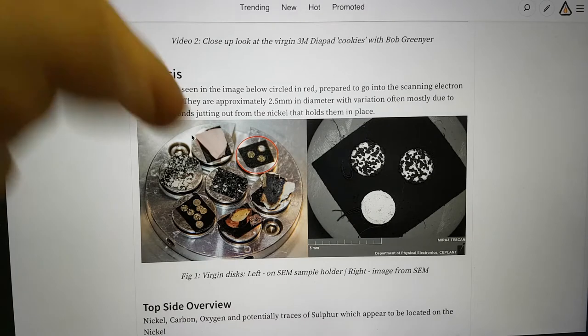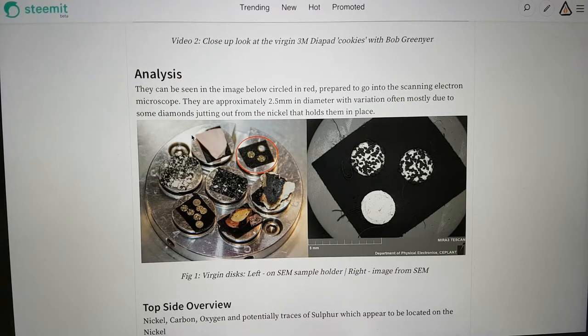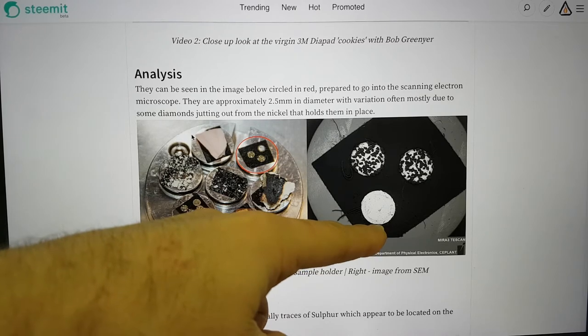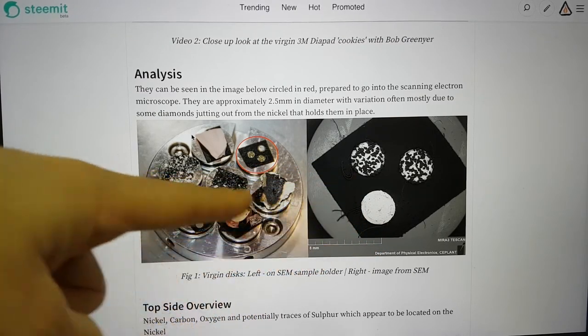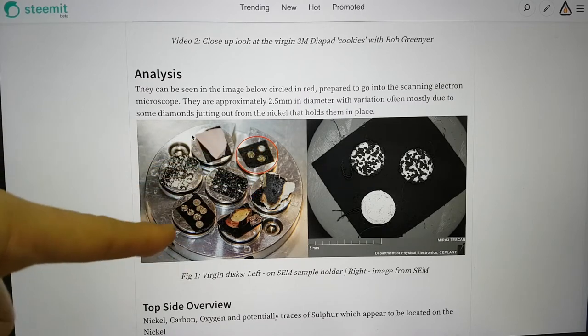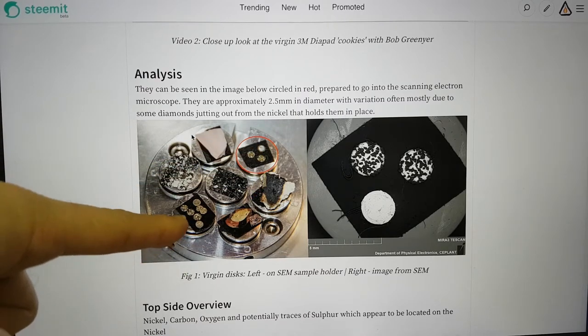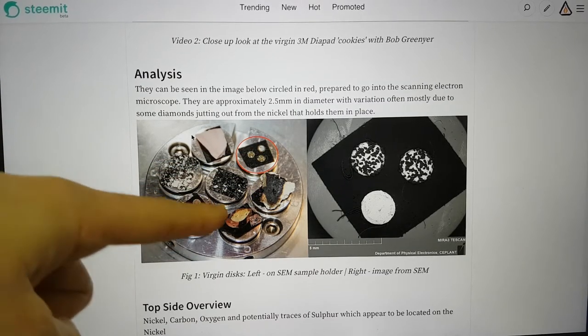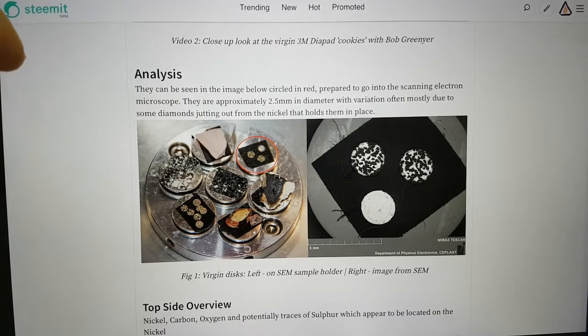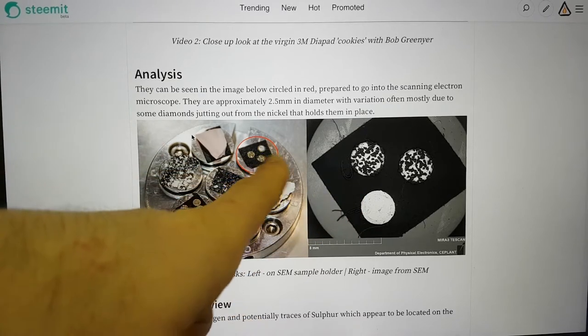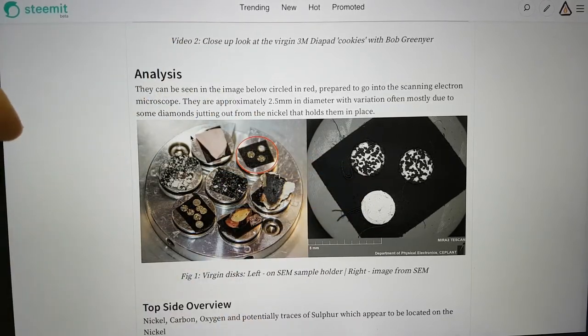Two on the cut side and one on the back side. The SEM is of the unused diamonds and nickel discs and this is a sample of those that ran in the Lion 2 reactor. This is what the unused discs look like in the SEM.